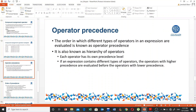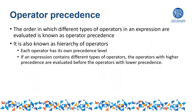Operator precedence is very important in any programming language. Operator precedence — or operator priority — determines which operator will be evaluated first in an expression. It basically shows the order in which different types of operators in an expression are evaluated. Each operator has its own precedence level, just as in algebra. If an expression contains different types of operators, operators with higher precedence are evaluated before operators with lower precedence.